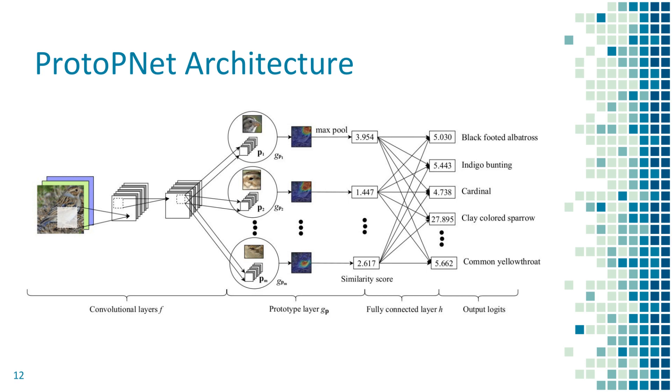In our experiments, we integrated the prototype layer with VGG, ResNet, and DenseNet architectures. The experimental results show that ProtoP-Net can achieve comparable accuracy with its analogous non-interpretable counterpart.